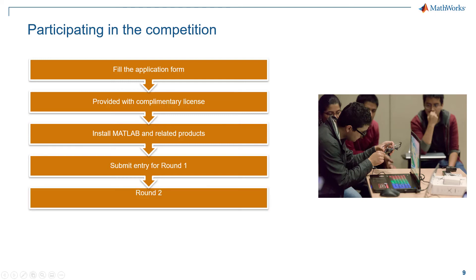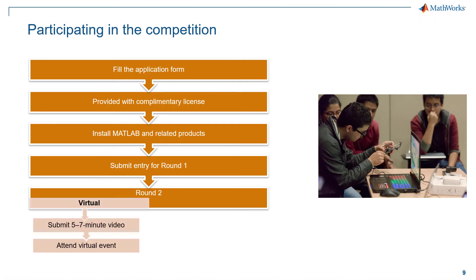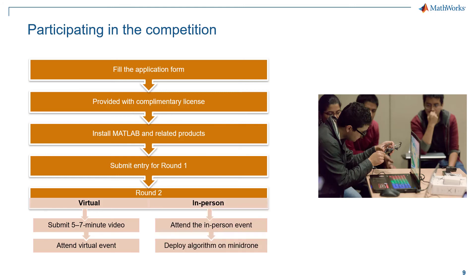If my team gets shortlisted for round two, I will have to submit a short five to seven minute video of my approach to the problem statement if the competition is virtual. These winners will be decided on their round one performance. However, if the competition is an in-person event, my team will be called to the venue where we will be given a mini drone and will deploy the designed algorithm on the hardware. Whichever team performs the best, decided based on the rules, will win the competition.